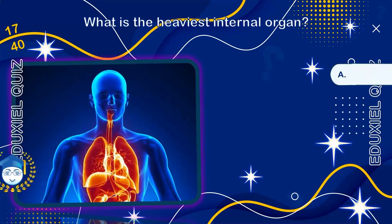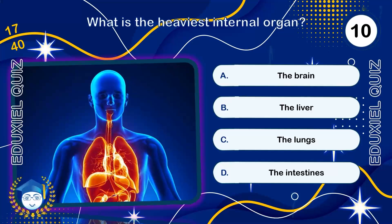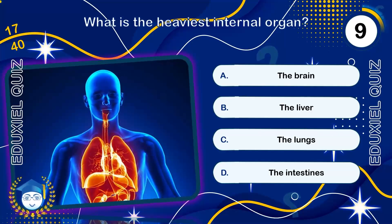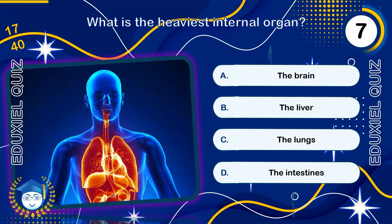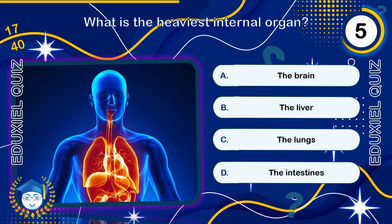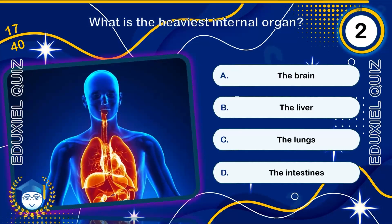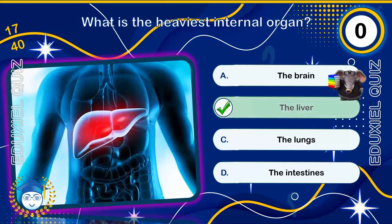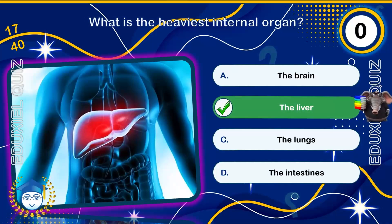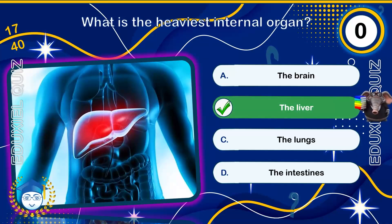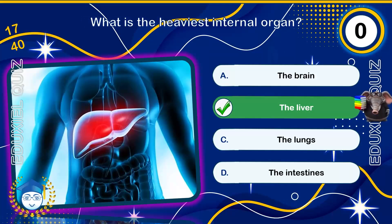What is the heaviest internal organ? The liver, weighing about 1.5 kilograms, 3.3 pounds. In adults, the liver is the largest internal organ and is unique in its ability to completely regenerate from as little as 25% of its mass.